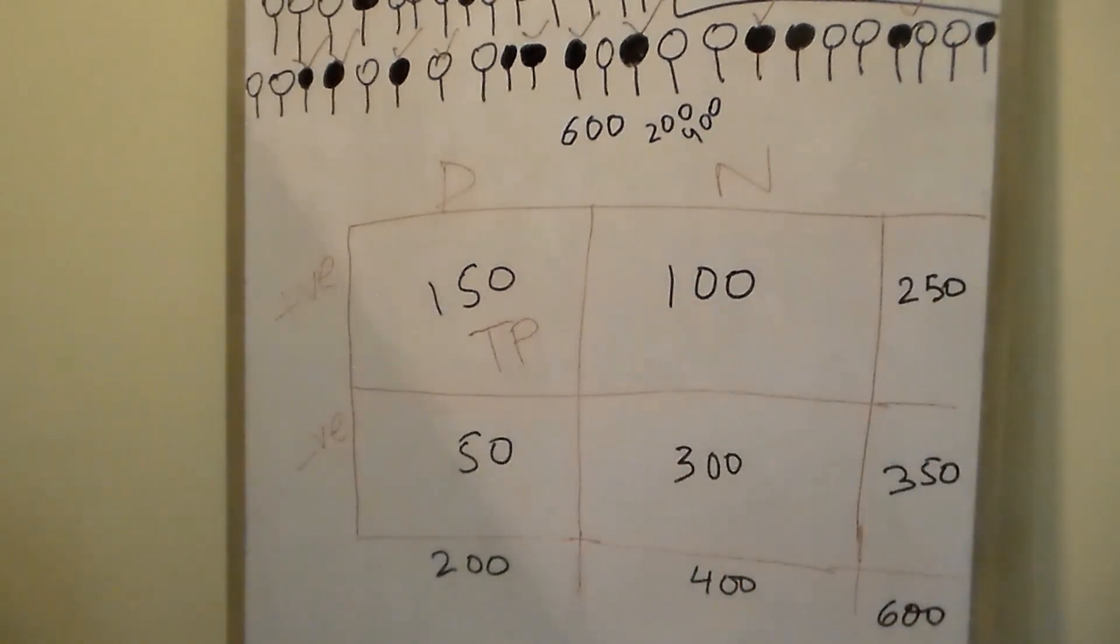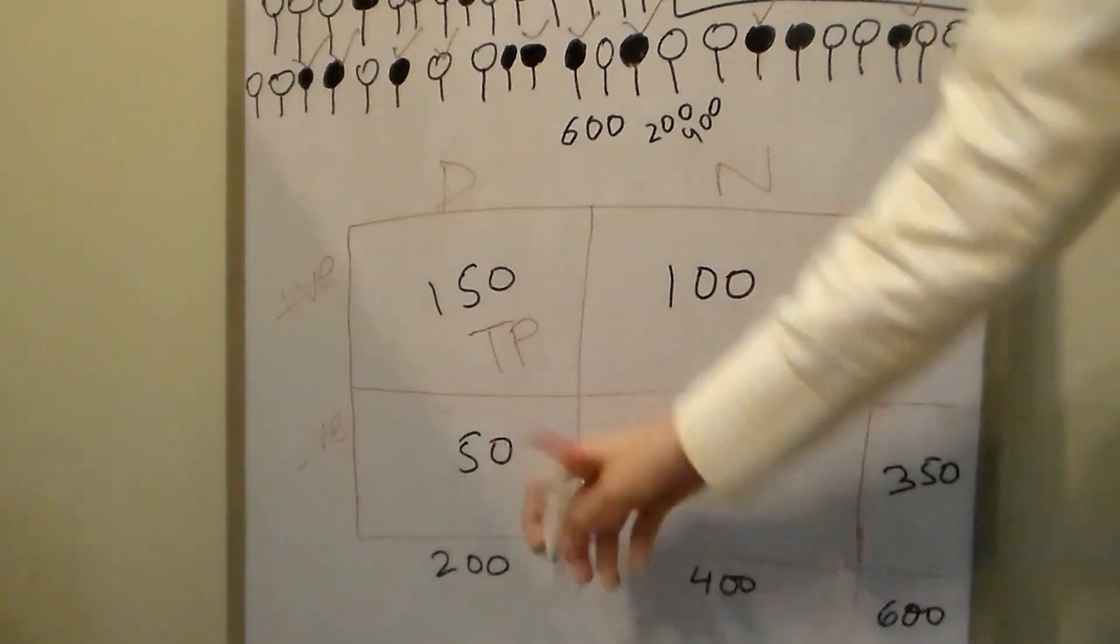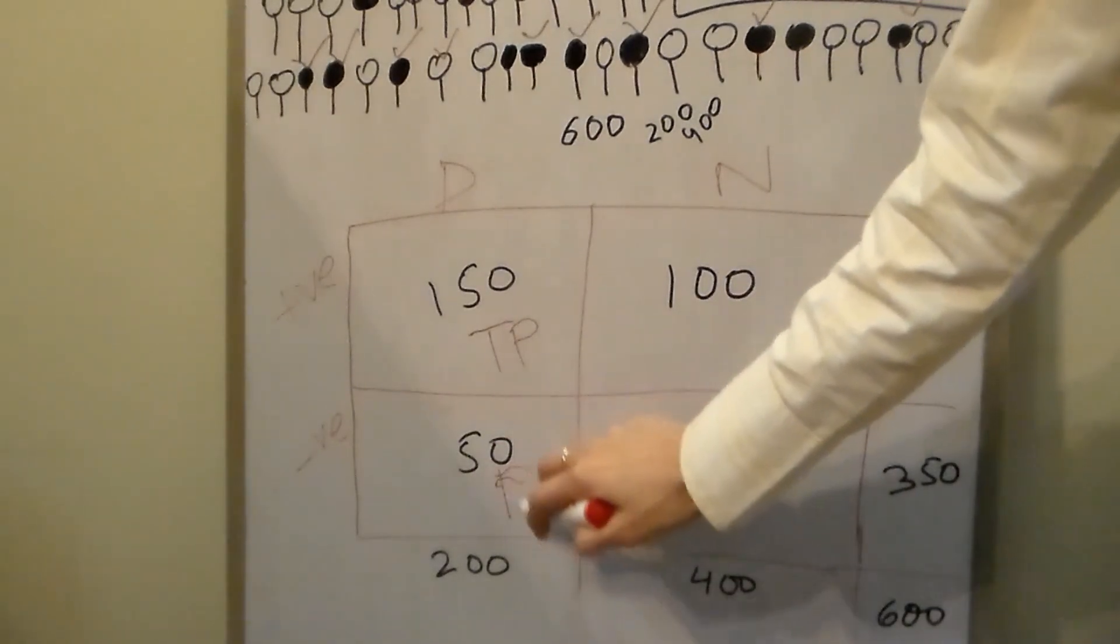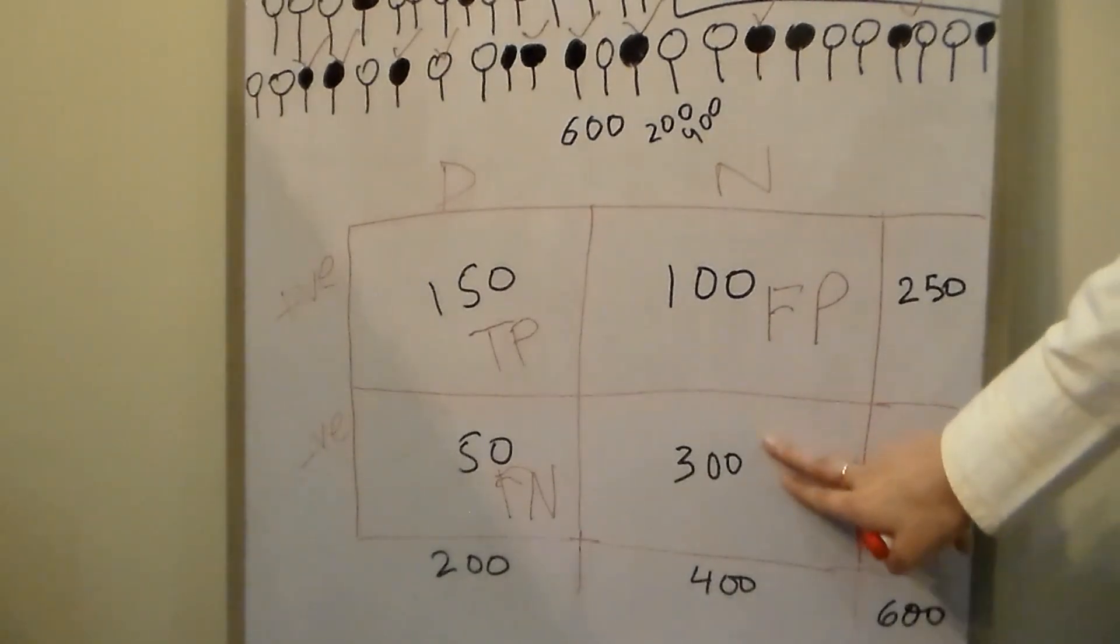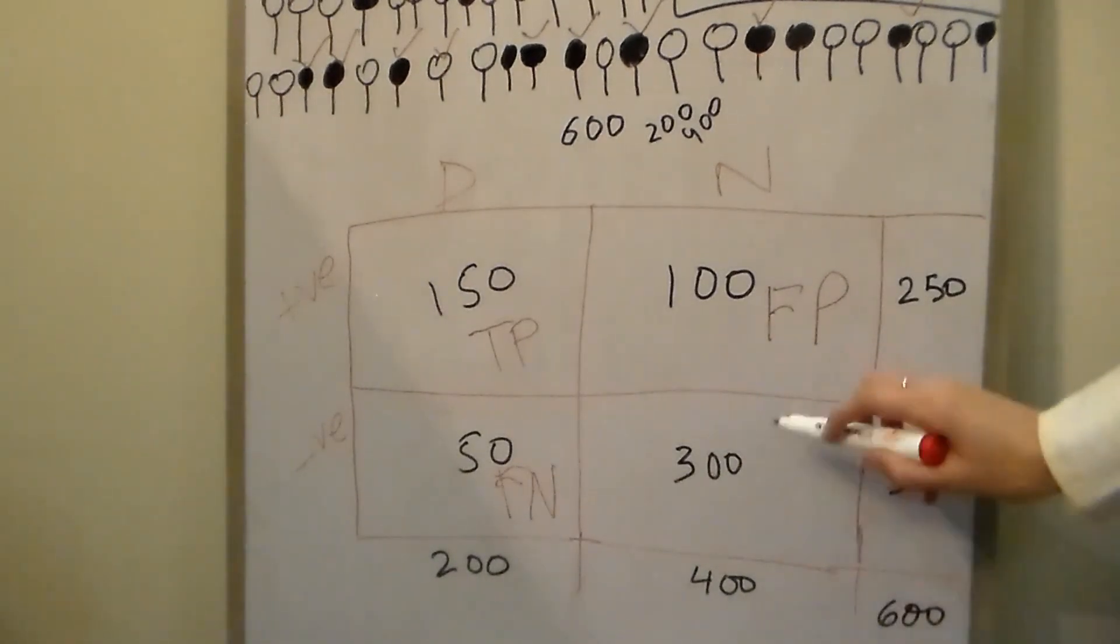The people who tested negative despite having the disease are false negatives. The people who tested positive despite being normal are false positives. And the people who tested negative when they were normal are true negatives.